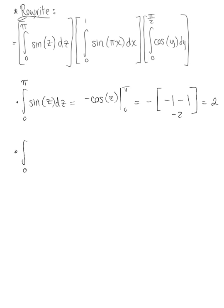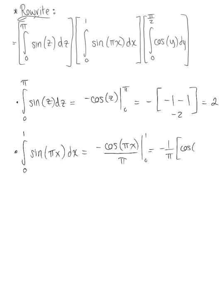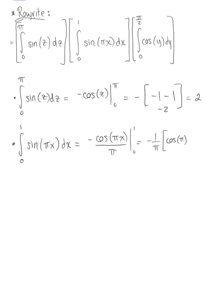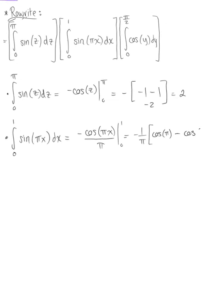Next, we have the x integral: the integral from zero to one of sine of pi x dx. This integrates to minus cosine of pi x over pi, evaluated from zero to one. Keeping minus one over pi out front, we have cosine of pi minus cosine of zero, which is negative one minus one. So we get minus one over pi multiplied by negative two, which is two over pi.